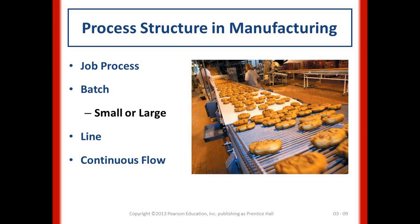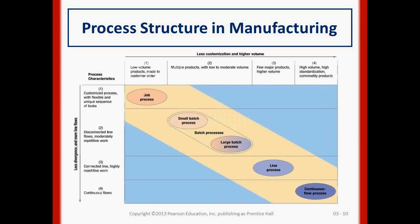Continuous flow is typically commodity-based, with huge volumes and only one or two products. The line process may have a few variations — for example, producing an SUV, a family vehicle, or a small vehicle on an assembly line. Batch process has more product variation, such as different kinds of candies, but lower volumes. Job process produces only one unique product.